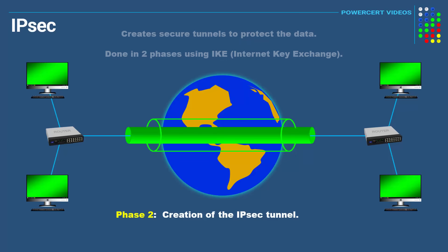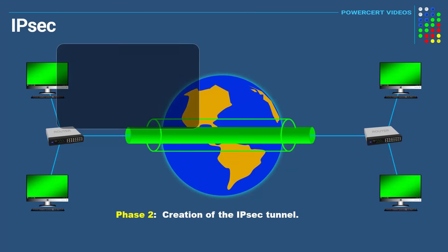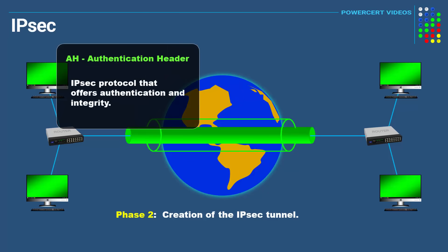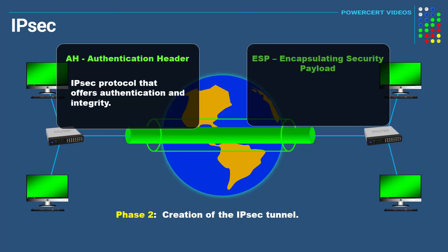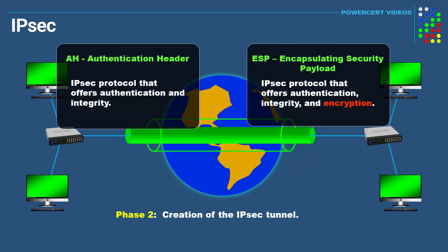Protection can be done using a couple of different protocols. One is called AH, or Authentication Header. This protocol offers authentication and integrity, but it doesn't do any encryption. Because it doesn't offer encryption, the other protocol — called ESP, or Encapsulating Security Payload — is the better of the two. ESP does all three: it offers authentication, integrity, and encryption.